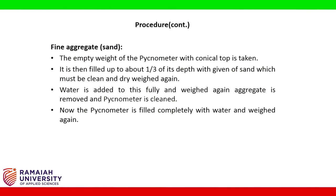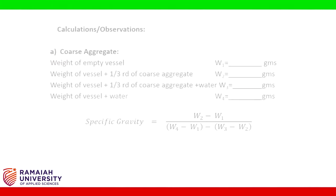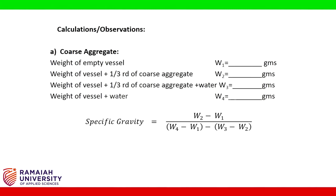For fine aggregate (sand): the empty weight of the pycnometer with conical top is taken. It is then filled up to about one third of its depth with clean and dry sand and weighed again. Water is added to fill it fully and weighed again. The aggregate is removed, the pycnometer is cleaned, then filled completely with water and weighed again.